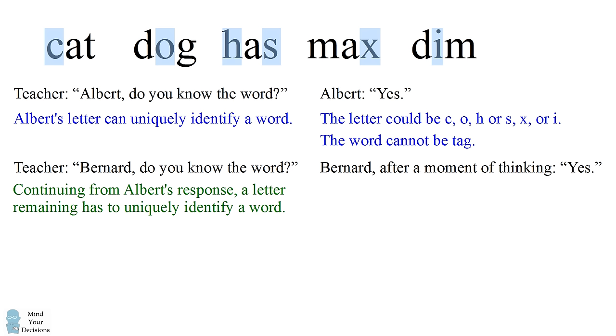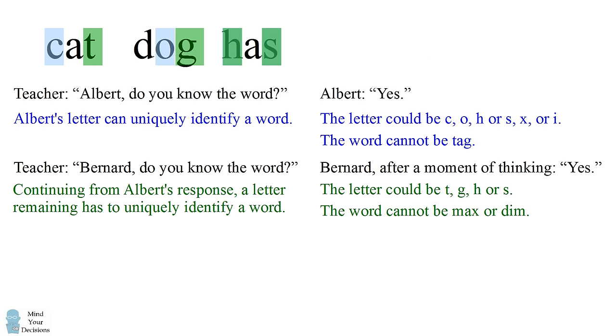So we go through this list. It could be the letter T. It could be the letter G. It could be the letter H if Albert had gotten the letter S. Also, it could be the letter S if Albert had gotten the letter H. These are the possible choices. The other letters appear more than once in this list of remaining letters that Bernard could have gotten. What this means is that the word could not be max or dim. So we can eliminate those words.